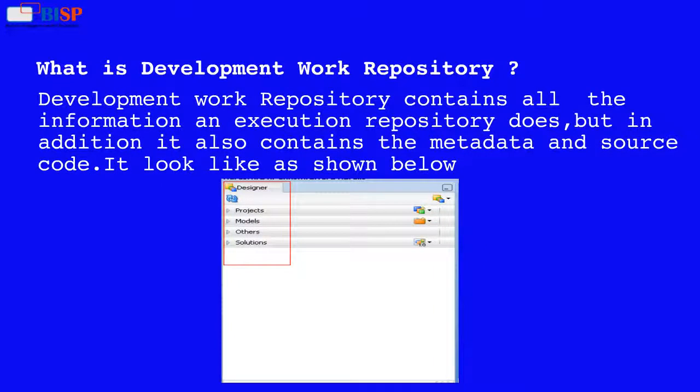What is development work repository? The development work repository contains all the information an execution repository does, but in addition it also contains the metadata and source code.